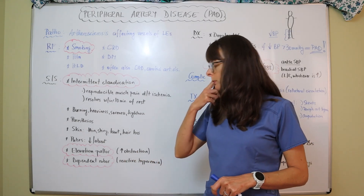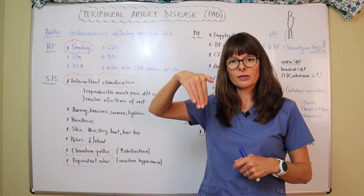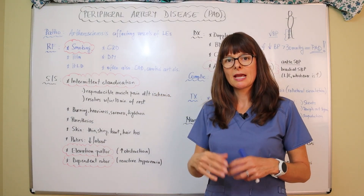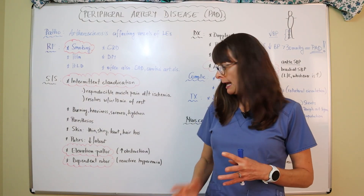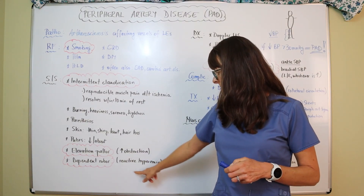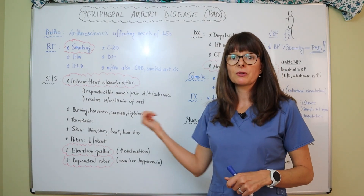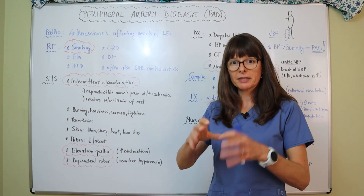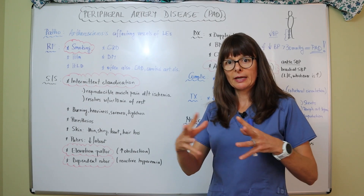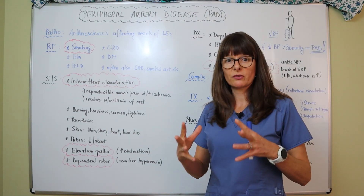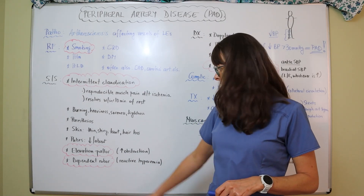Dependent rubor means that if the patient sits in a chair with the lower extremities in a dependent position, the limbs turn a ruddy reddish-blue color. This is due to reactive hyperemia — an increased amount of blood flow after exercise, as the body tries to feed the lower extremities with extra blood, causing them to become engorged and appear red, or ruber.